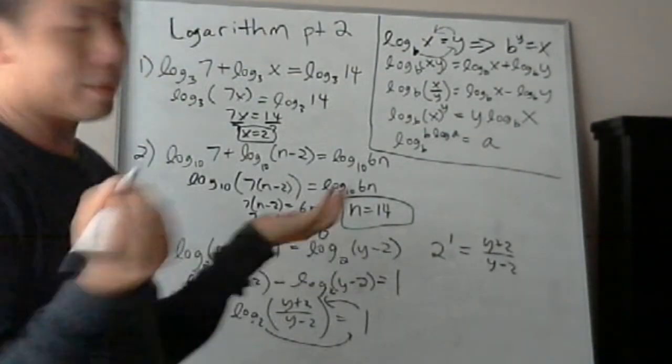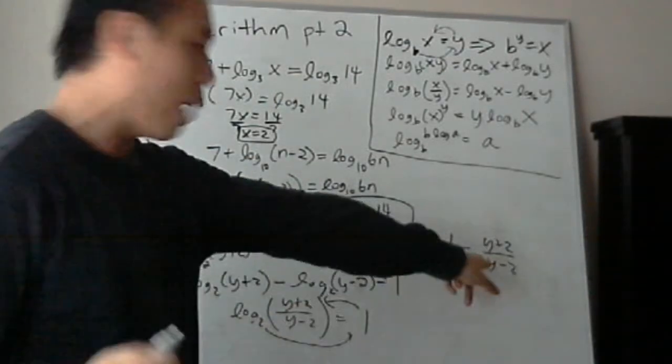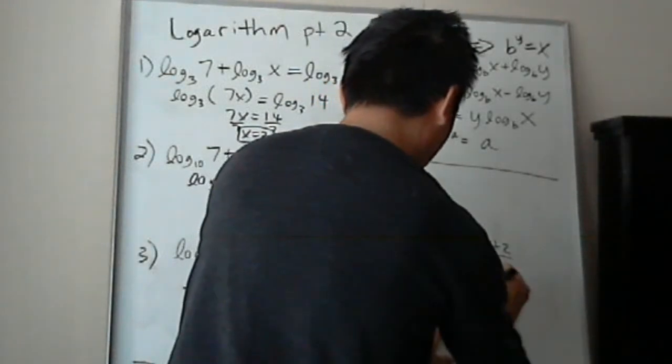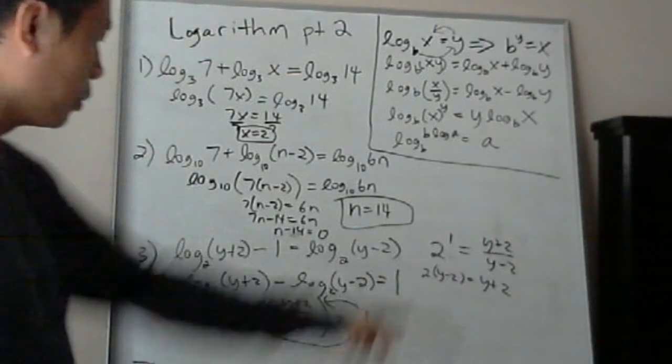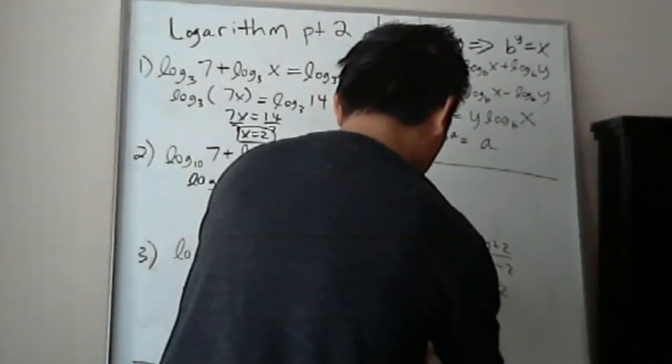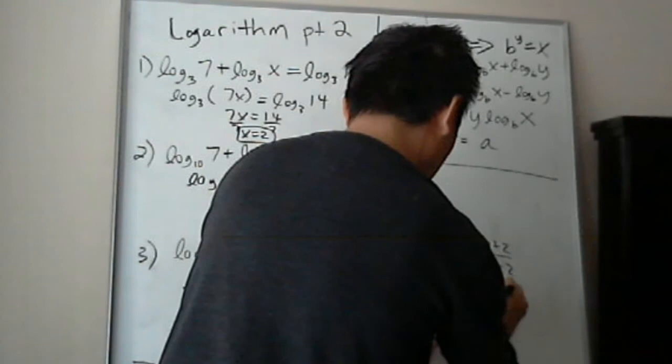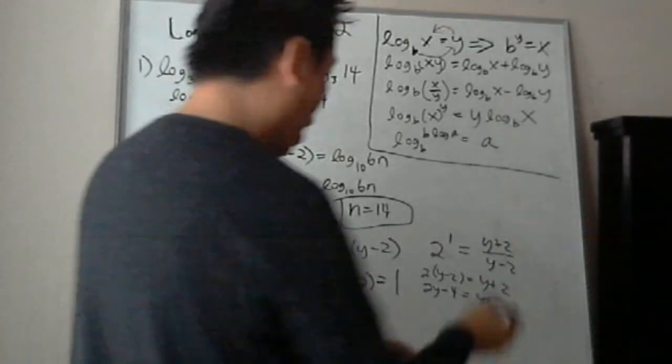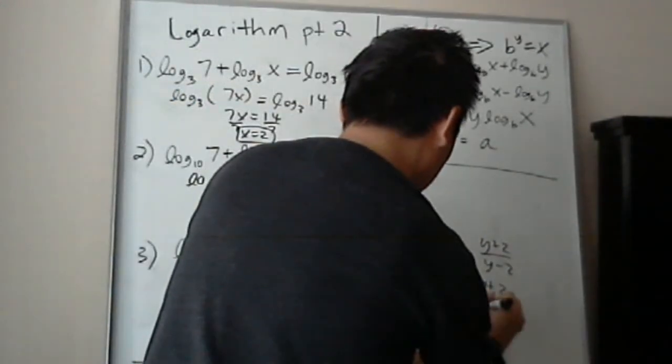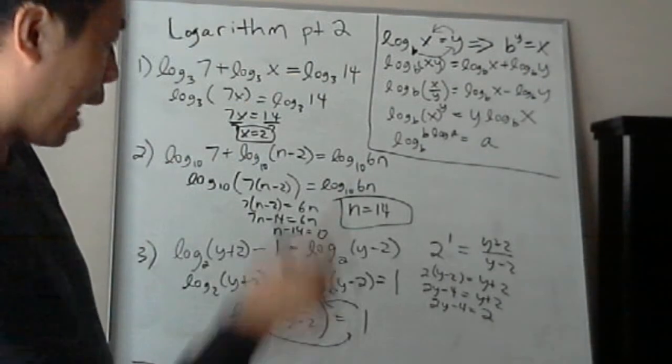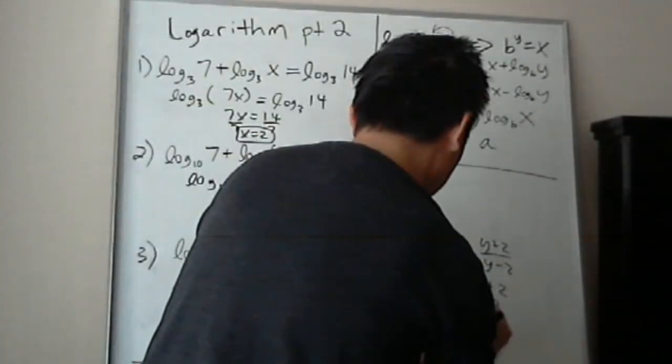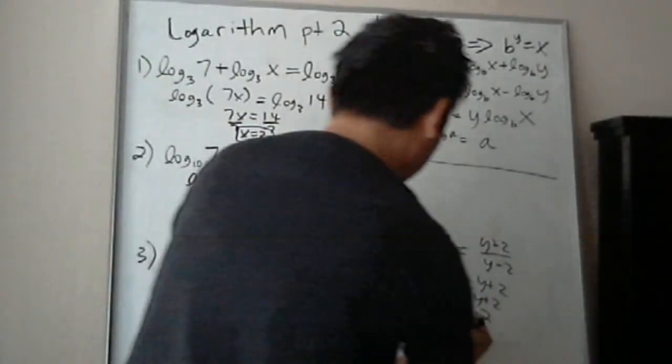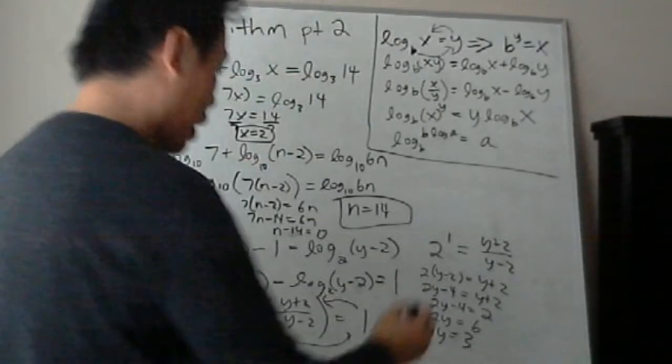And then what do you do here? 2 to the 1 power is just 2. And then you multiply y minus 2 on both sides to get rid of the denominator, so you'll get 2 times y minus 2 equals to y plus 2. Now I distribute it. 2y minus 4 equals to y plus 2. Now let's subtract y on both sides. Now I should add 4 on both sides. So now I divide by 2. 2y equals 6, so y equals to 3. And that is your answer.